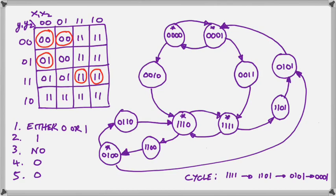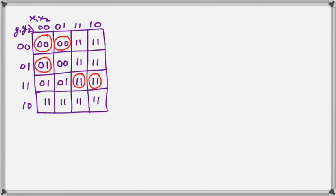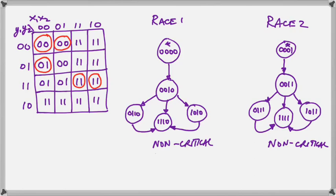And finally, we look at the races. We see that there are two races: one when we move from 001 to 003, and one when we move from 0000 to 0010.